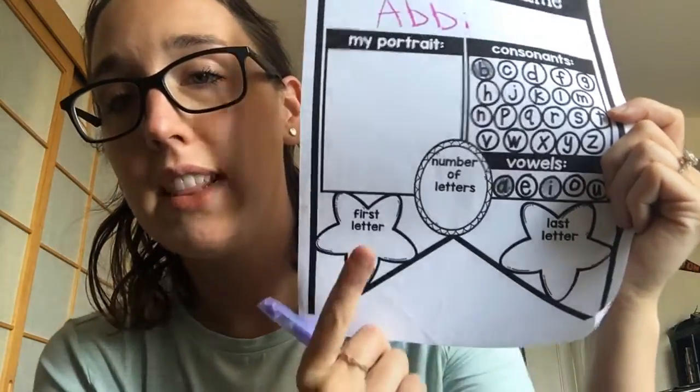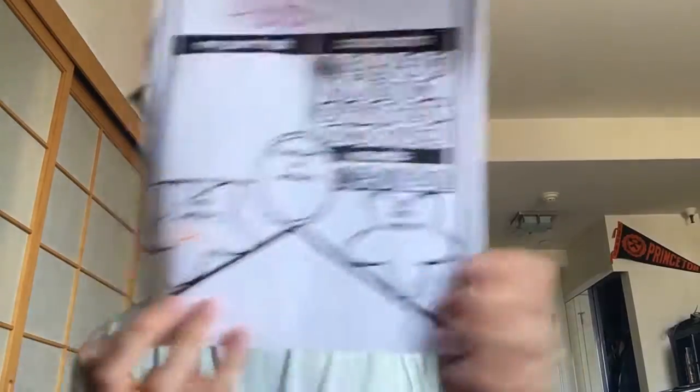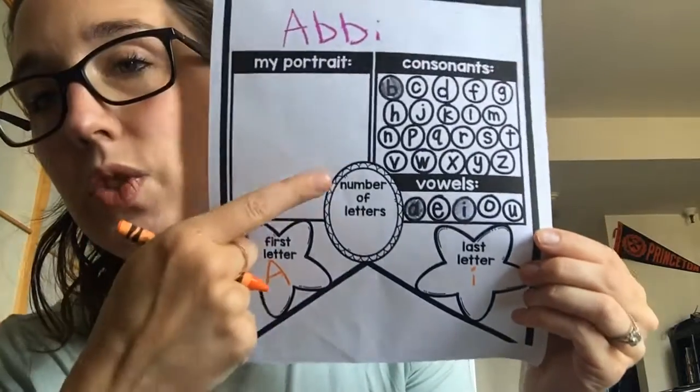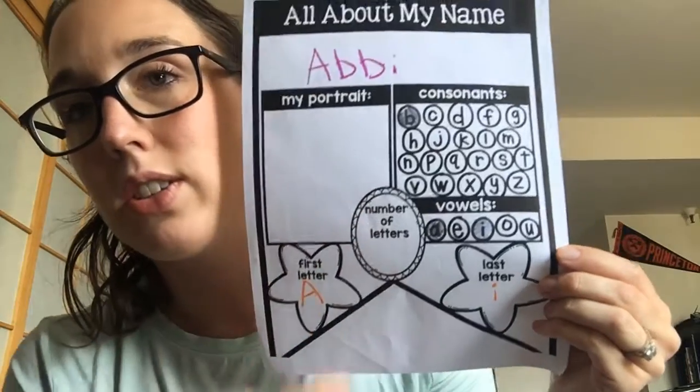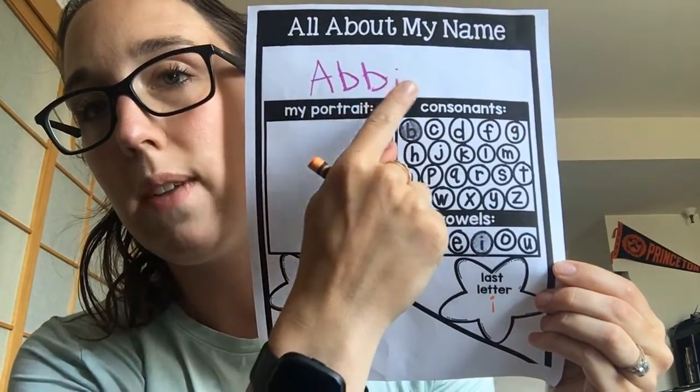There are three more things I want to do together, and then you can do this part on your own. This one says first letter — what is the first letter in your name? I'm going to switch colors and write my first letter, which is an A. Then it asks for your last letter; the last letter in my name is I. And it also asks for the number of letters. I have one, two, three, four letters in my name.